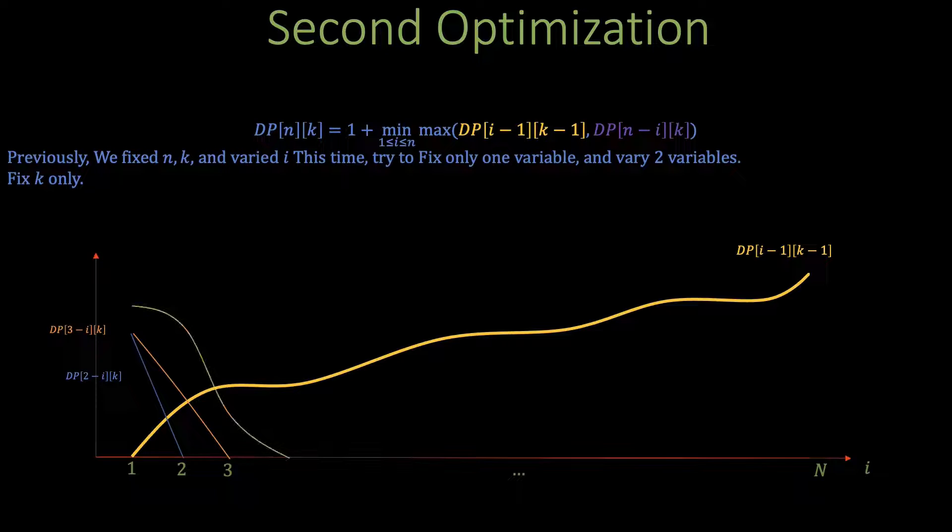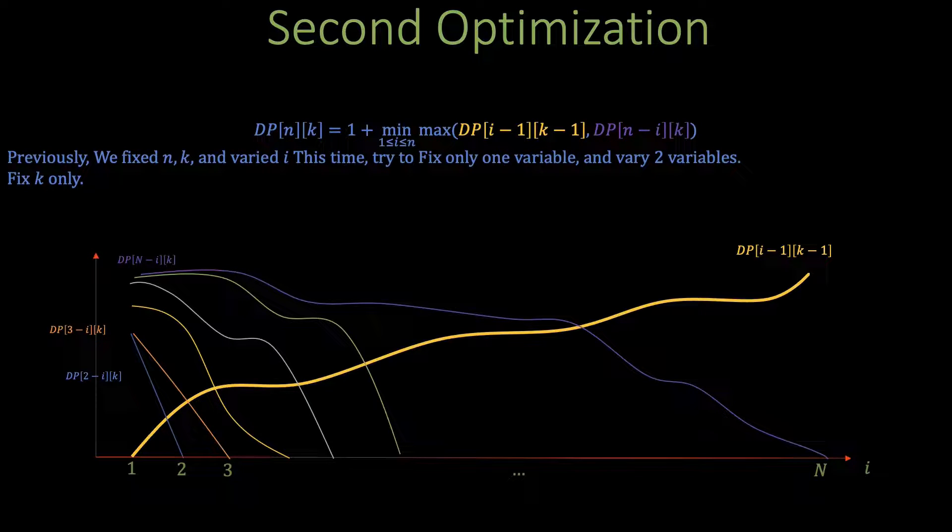The same can be said on dp[4-i][k] for every single index i its value is at least dp[3-i][k] and the same thing can again be said on dp[5-i][k] and dp[6-i][k] and so on until dp[N-i][k] as shown in the figure.